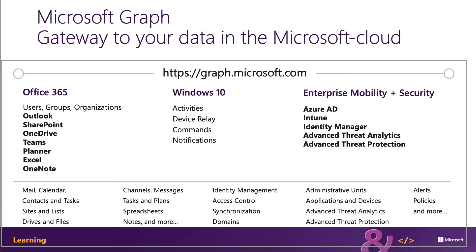Many of these services have their own APIs that developers can interact with. However, this can be challenging to go to each of these individual services with their individual endpoints. Each API may have its own permission model, which means that they can have individual access control configurations. Different endpoints for each service mean our custom application will need to obtain an access token from Azure AD for each of the different endpoints.